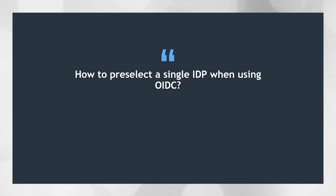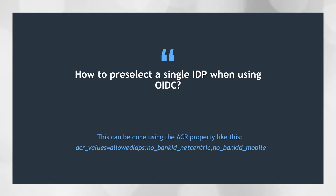Now let's jump back into common questions asked when using OIDC. How can I pre-select a single IDP when using OIDC? As you saw from the demo, we could use both BankID, BankID Mobile and SMS OTP to login. But what if I only wanted to use BankID - how could I pre-select that? In OIDC there's something called ACR values. You can add to your ACR values claim the allowed IDPs and select the IDPs that you want to use - you just separate them with a comma. Read more about this in our documentation.